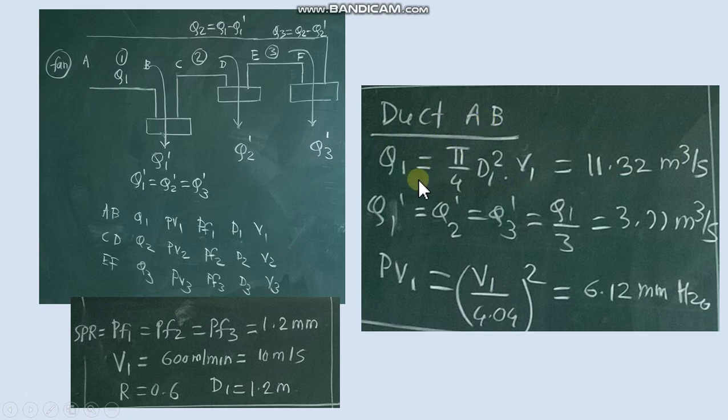In duct AB, Q1 = π/4 D1² × V1. So diameter and velocity for main duct is given so we can calculate Q1. Now this Q1 discharge is divided into 3 parts equally. So we get at each end discharge as main discharge divided by 3 that is 3.701 m³ per second.